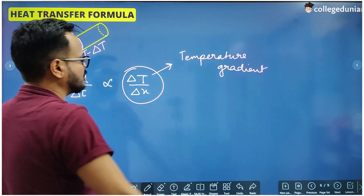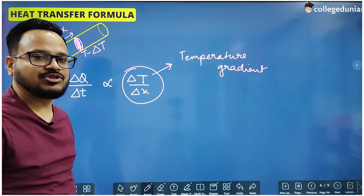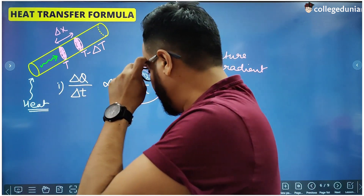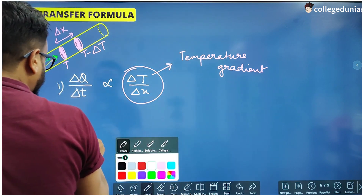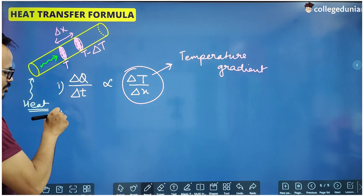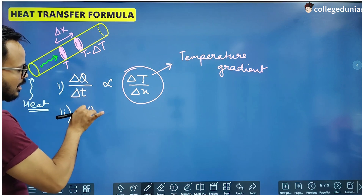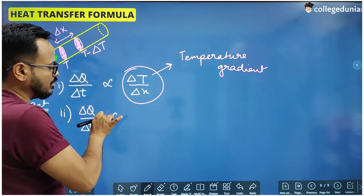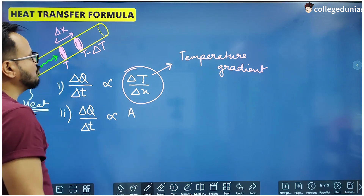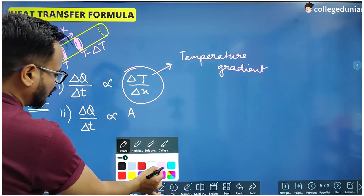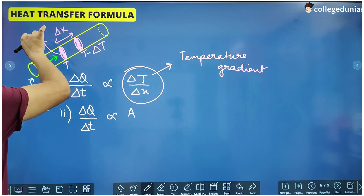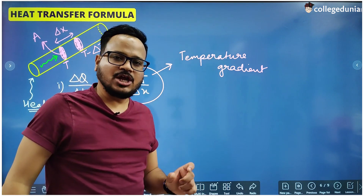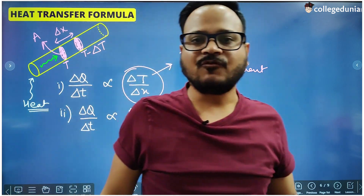More is the difference of temperature per unit length between the two cross-sections, more will be the rate of flow of heat through that material. Number two, it depends on A — the area of cross-section of this material. More is the area of cross-section, more will be the rate of flow of heat from one cross-section to the other.